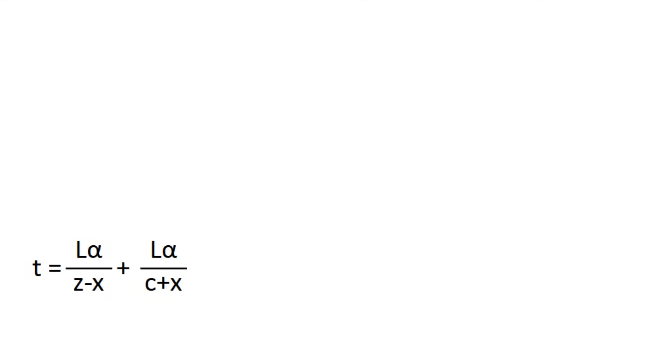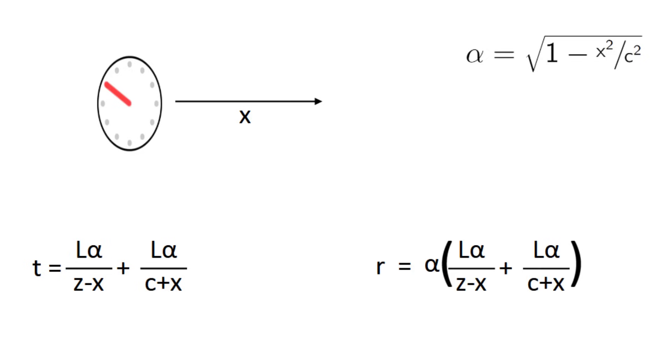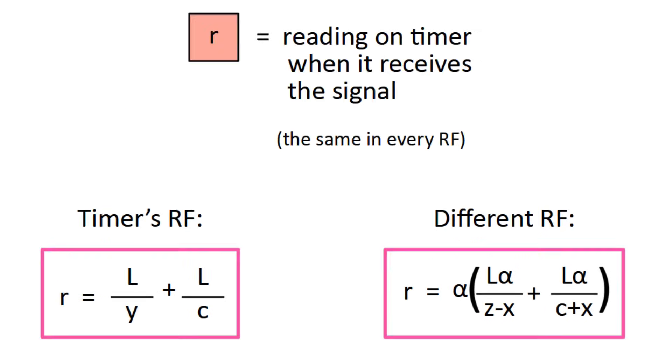But remember, in this reference frame, the timer is moving at x, meaning it ages slowly by a factor of alpha. So to get the reading on the timer, we have to multiply the time by alpha. With that, we've calculated what the timer reads in both reference frames in terms of different variables. But they must be the same, so we can set them equal.